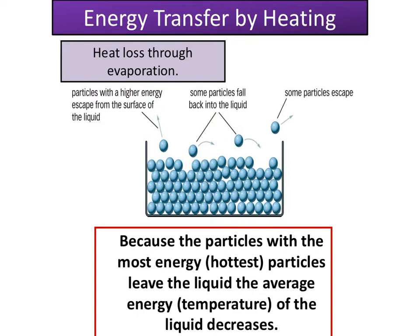Evaporation is when we go from a liquid to a gas. Liquid particles break their bonds and move away from the substance. Only the particles with the most energy — the hottest particles — can leave. Because the hottest particles leave, the average energy and temperature of the remaining substance decreases. Therefore, when particles evaporate, that reduces the temperature of the original substance.